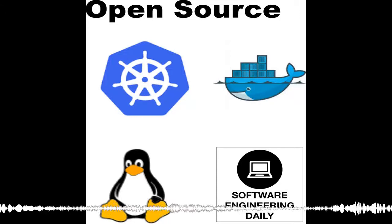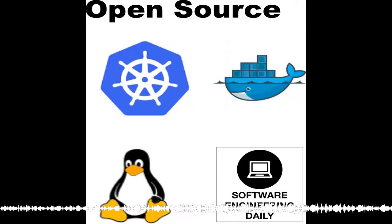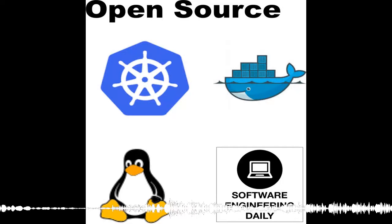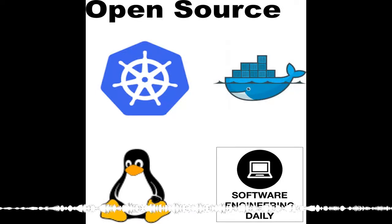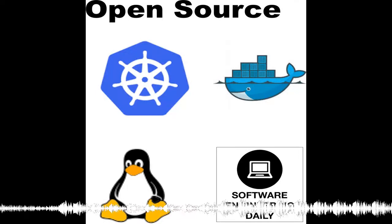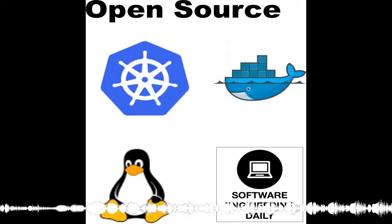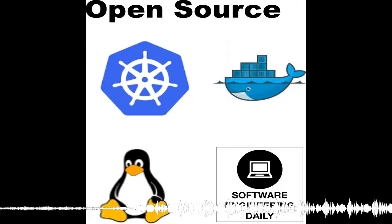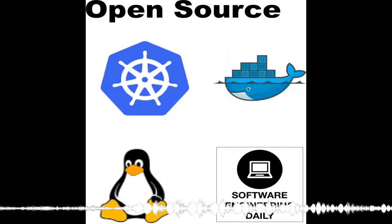What Kubernetes and Mesos in particular are good at is what I would generally call a data center OS or infrastructure OS, which manages right from your infrastructure installation all the way through the lifecycle of the application and everything in between. Mesos and Kubernetes both simplify the operations of a cluster of compute nodes.